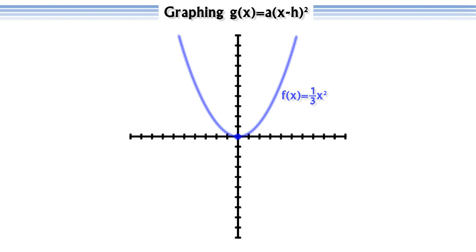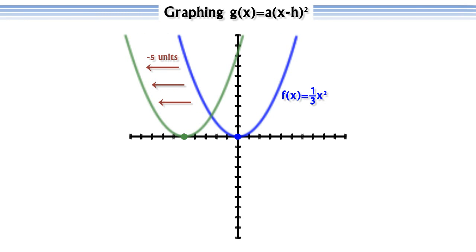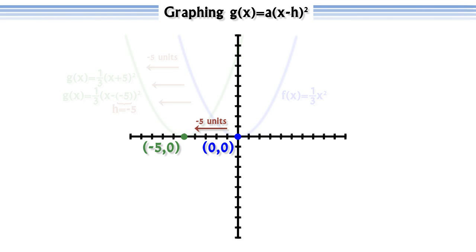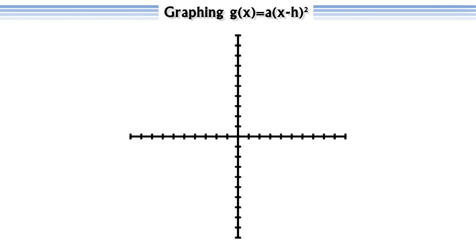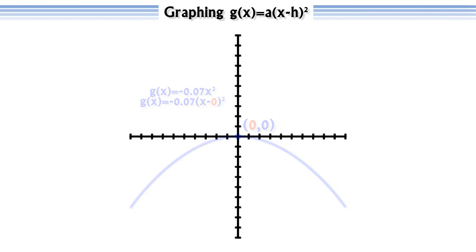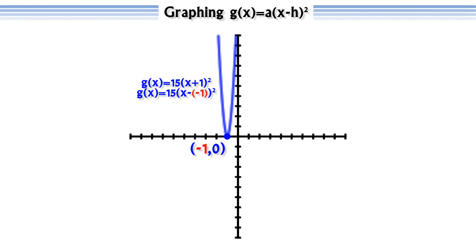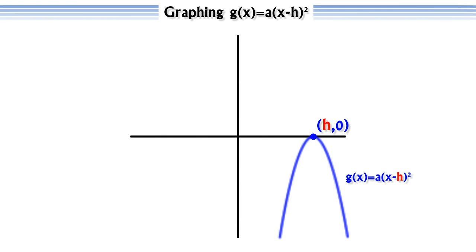Again, if we wanted to shift f(x) = (1/3)x² to the left 5 units, think of it as shifting the parabola to the right negative 5 units, so we would replace x with x minus negative 5, or (x + 5). In this example, h equals negative 5. Remember that h represents how many units to the right the parabola was shifted. Notice that this shifted the vertex from (0, 0) to (-5, 0). So in general, we can graph functions of the form g(x) = a(x - h)² by graphing f(x) = ax² and shifting it left or right h units. The vertex will be the point (h, 0) and the axis of symmetry will be x = h.